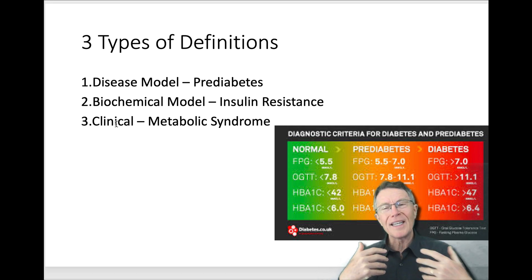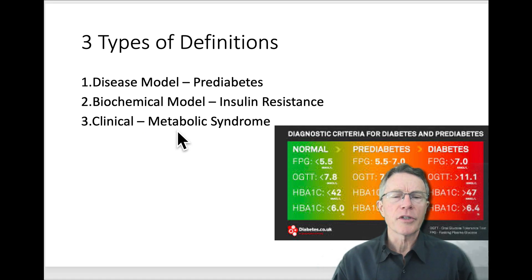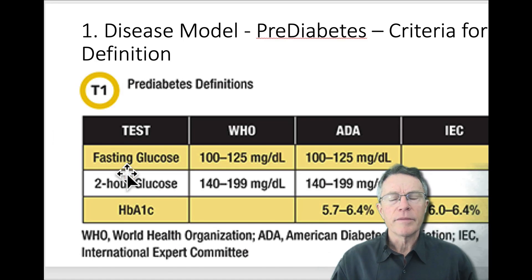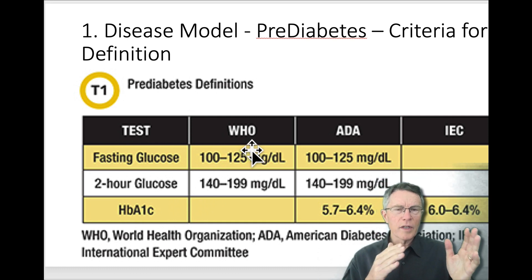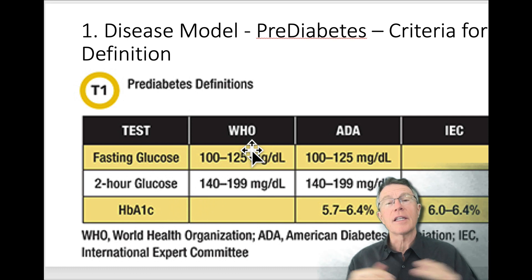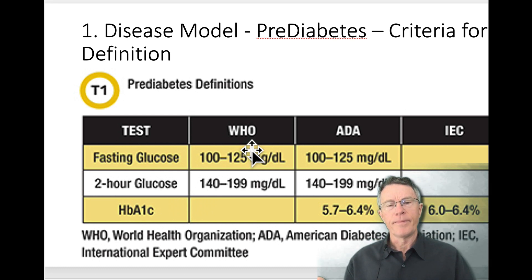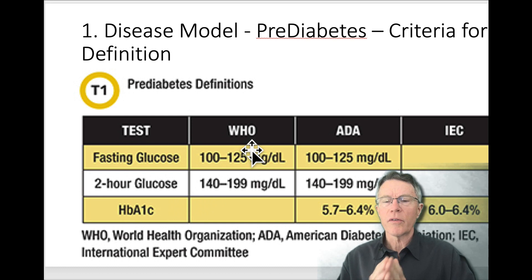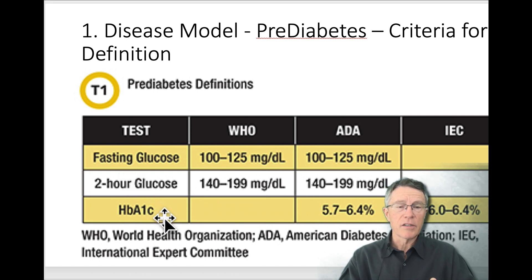As you see here, we've got multiple tests and multiple different expert organizations trying to define this, because there's one thing that most of us who work with this issue of insulin resistance, pre-diabetes, and diabetes call the diabetes highway. In other words, the only difference between pre-diabetes and diabetes is not the disease process — it's the same. The only difference is the degree. Different organizations have different definitions for the degree, and there are different types of tests.